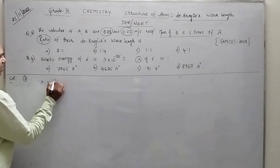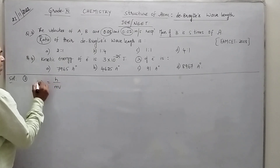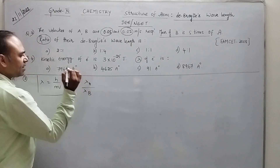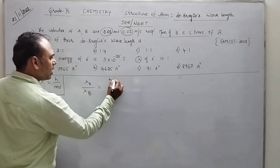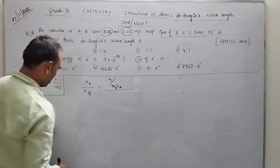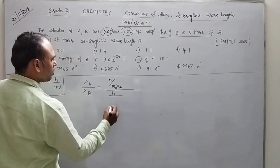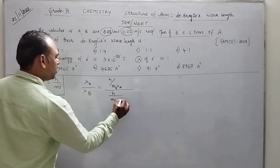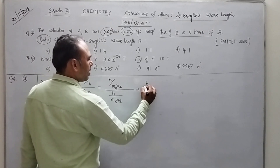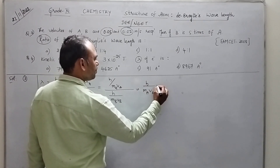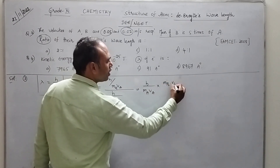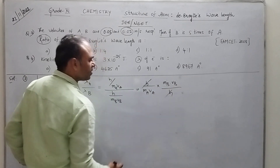You know the formula lambda is equal to H by MV. Applying that, we take lambda A by lambda B — that is H by MAVA divided by H by MBVB. This can be written as H by MAVA into MBVB by H. H and H get cancelled. They have given that the mass of B is equal to 5 times mass of A.